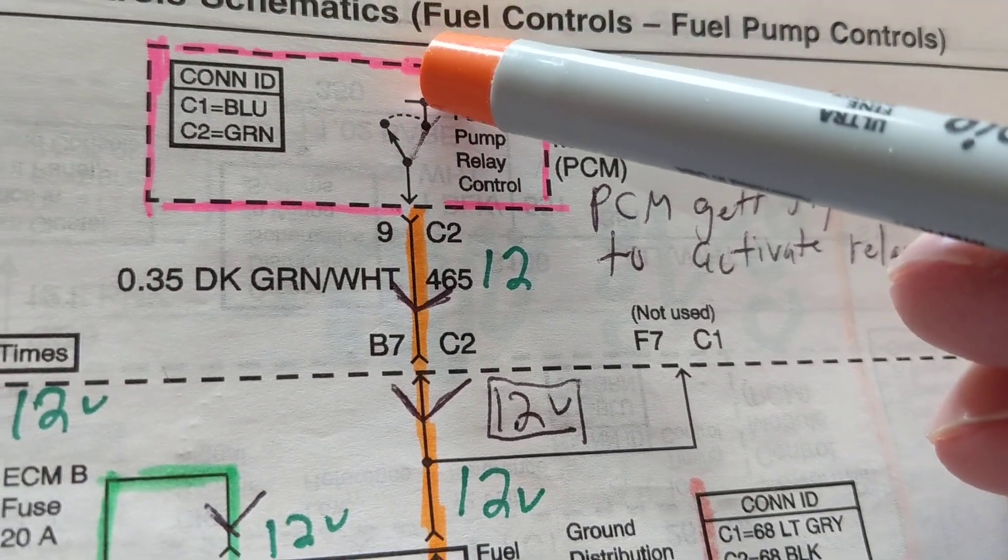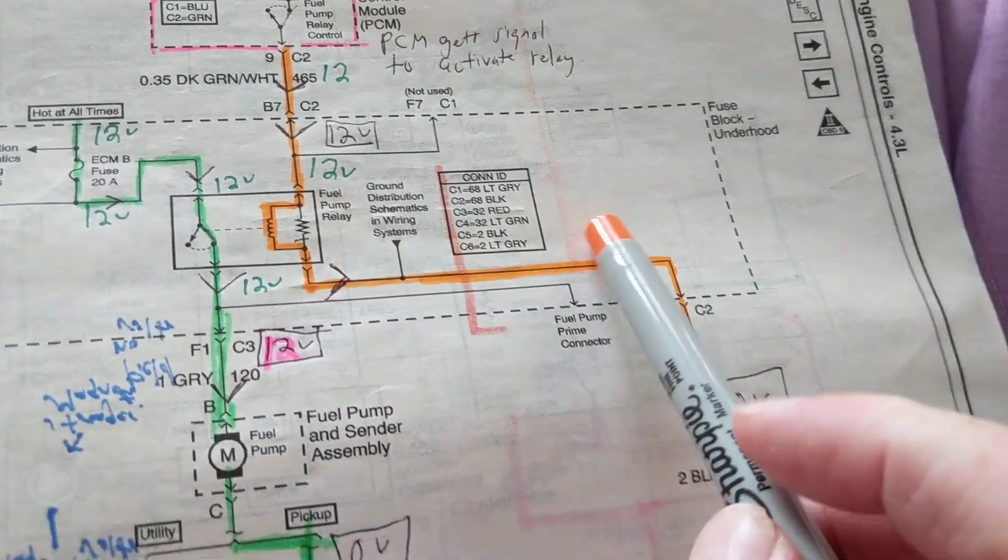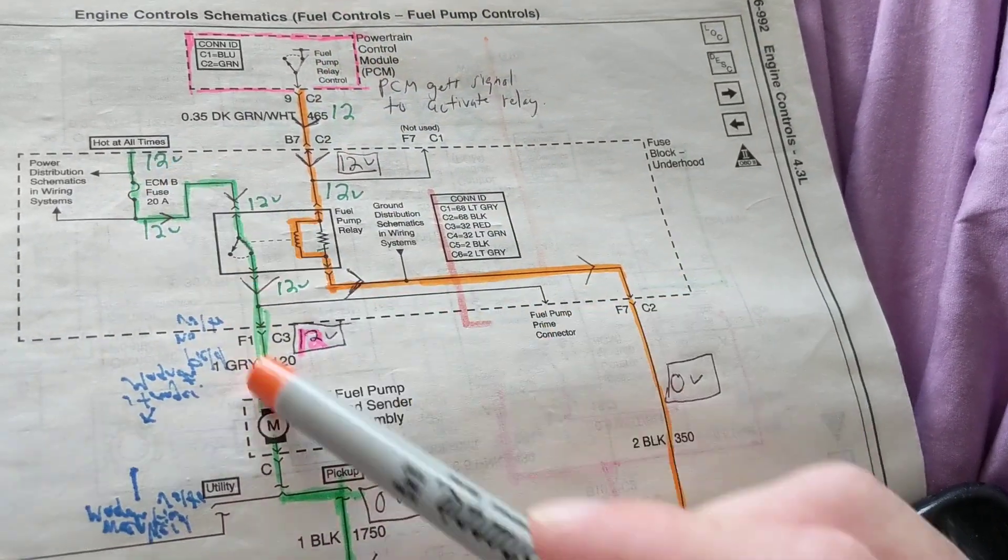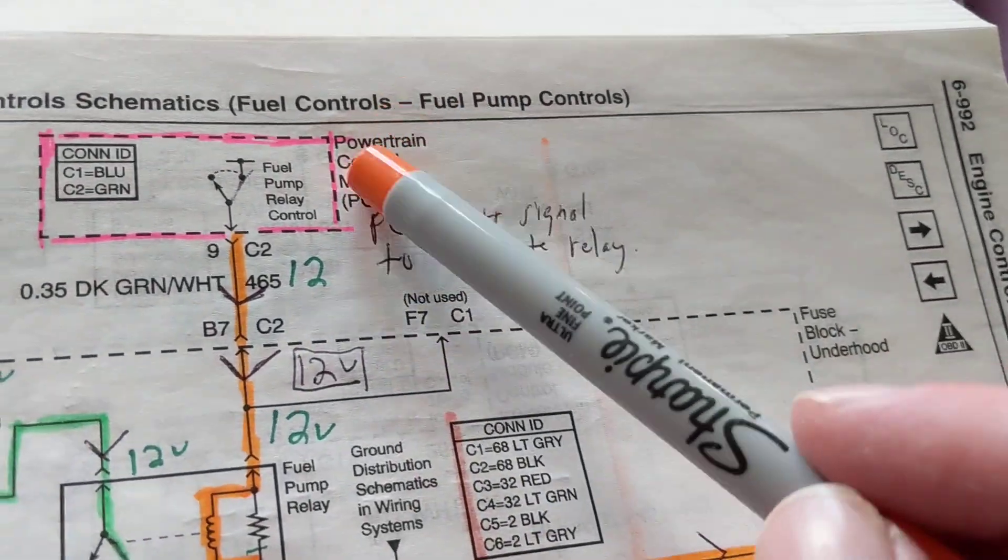This will be 12 volts. When this goes to 12 volts, what happens? Now this relay, the coil is activated through ground, and then this is activated to turn on the fuel pump.